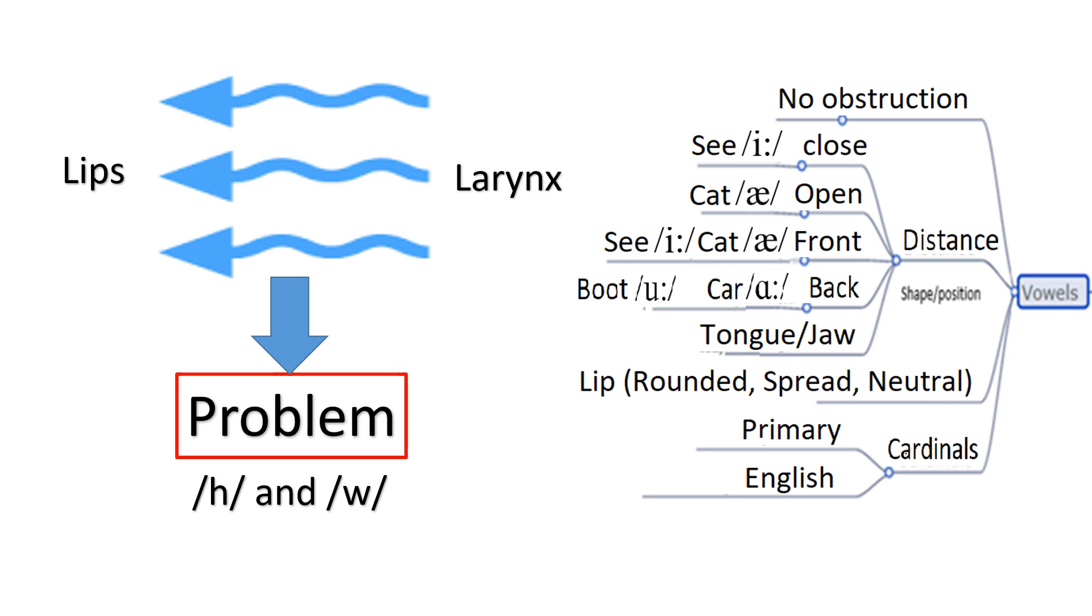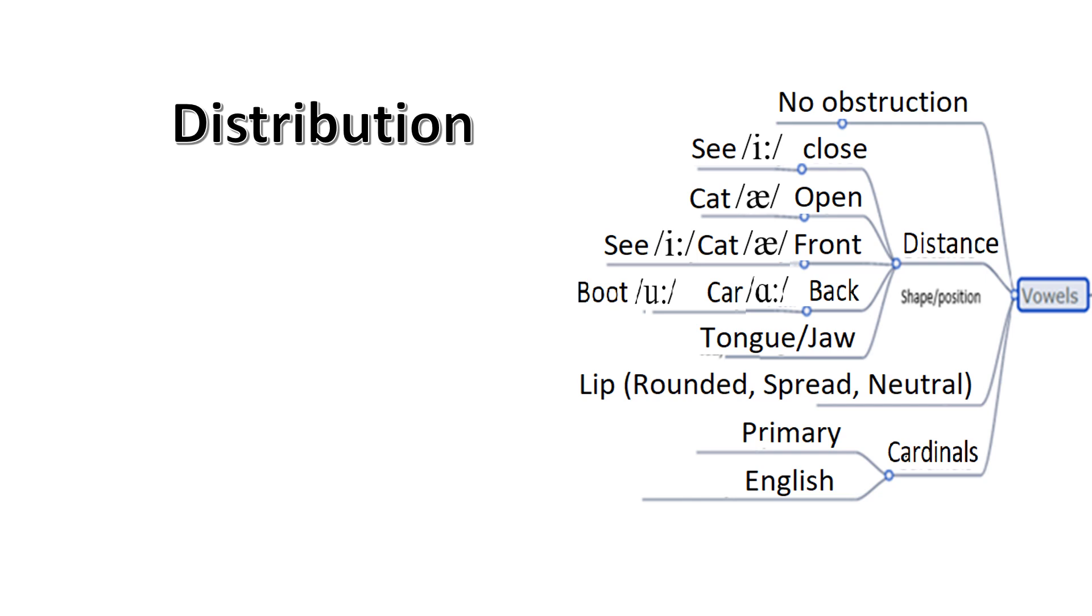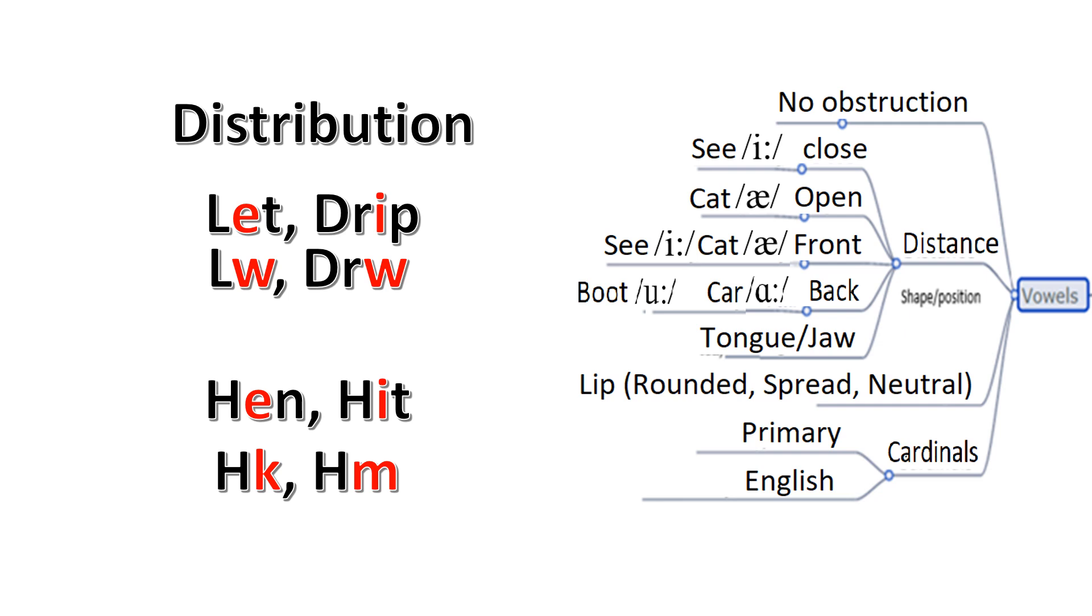These sounds are consonant but have the vowel feature, no obstruction, but still they are consonant sounds. The distribution of sounds can also pose a problem. We can see that the sound L can be followed by a vowel, having no obstruction, but cannot be followed by W, which also has no obstruction of airflow. The W sound does not occur in the same environment as a vowel.